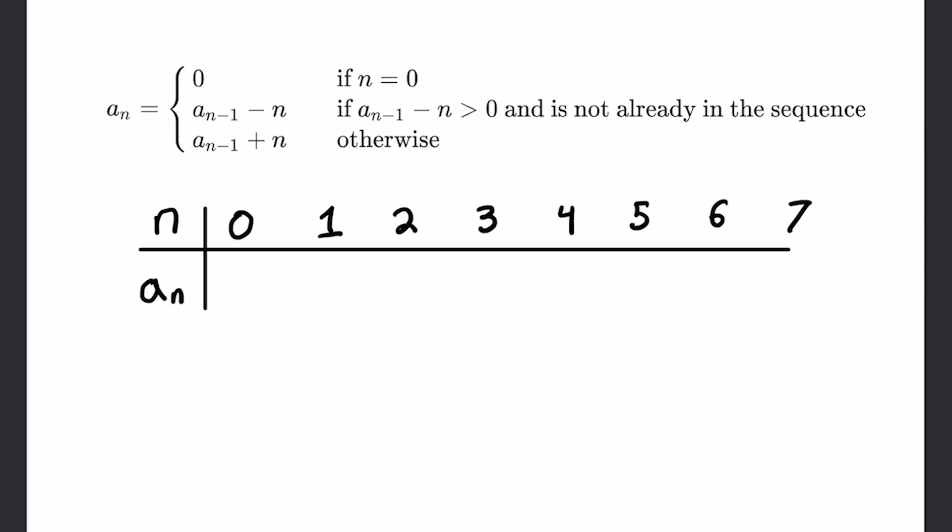Well, we know when n equals zero, a_n equals zero. That's the first condition. So I'll write a_0 here. Now a_1, there's two options. It can either be, well, remember n is one here. So this is a_0. It can either be a_0 minus one or a_0 plus one. And this is equal to minus one, and this is equal to positive one. Now we know that it's only equal to this if this whole thing is greater than zero and this is less than zero. So it has to be equal to one.